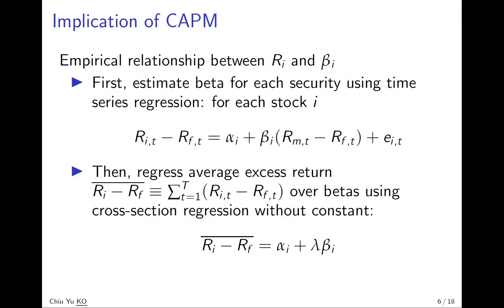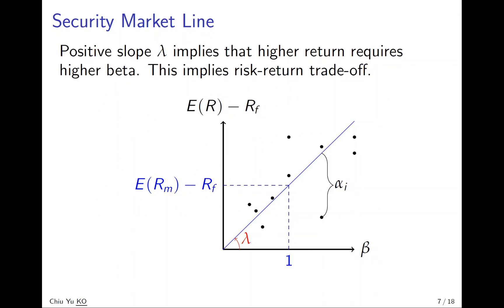Then what you're going to do is look at the average excess return. For each stock, you calculate excess return and average over time. Then for each stock you have average excess return and you try to regress excess return for each stock over every alpha i and beta i estimated from the first step, and to see how it looks like.